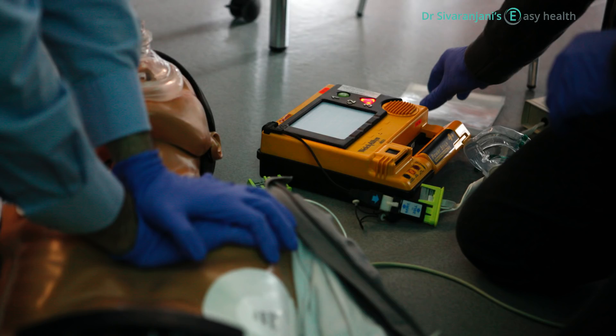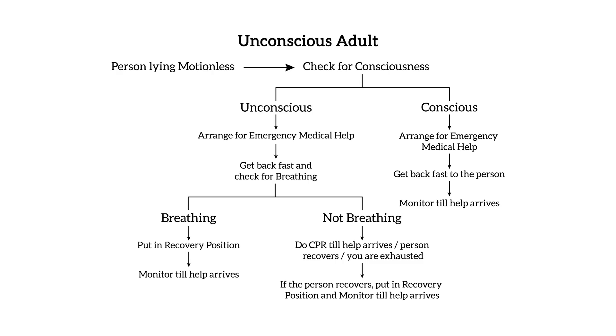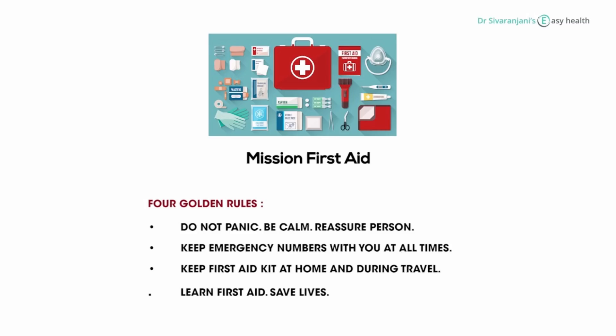There is something called an automated external defibrillator, or AED. This machine is available in malls, airports, railway stations, and big offices and shops. Many times in older kids and adults, the cause of the heart stopping may be an abnormal rhythm, and this machine helps restore a normal rhythm. Please do not waste time waiting for the machine — do your CPR and arrange for the machine. Once you connect it, it will give you prompts as to when to give a shock and when to do CPR. We will discuss this in one of our subsequent videos. Please subscribe to this channel and give this video a thumbs up if you like it.